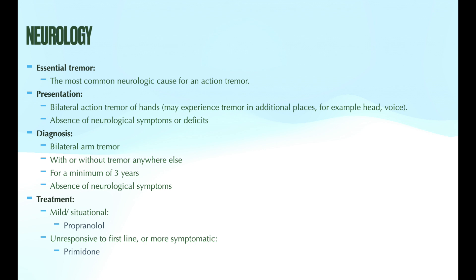For pharmacological treatment of essential tremor, propranolol is used for mild or situational tremor. Remember, that is a beta blocker, so we want to be cautious with who we prescribe that to. If the patient has more frequent and severe symptoms, the next option is an agent called primidone. This medication has a lot of negative side effects and should really be managed by someone specializing in neurology. So in the circumstance that propranolol is ineffective, these patients would be referred and managed by neurology.